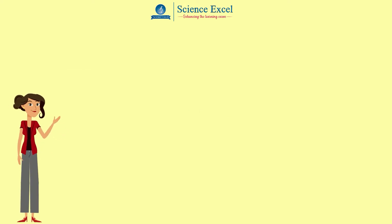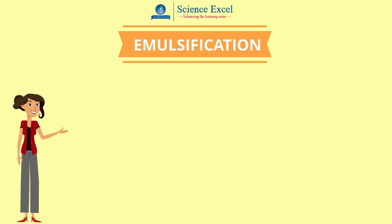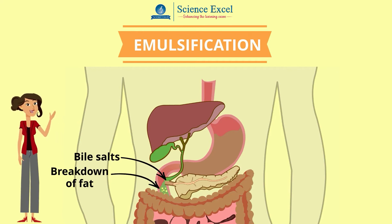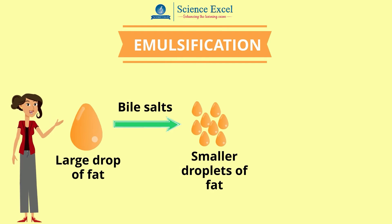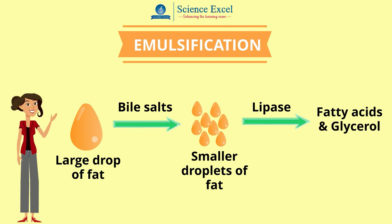Bile also has a second role, which is to emulsify fats. Emulsification is a type of mechanical digestion in which bile salts break down large drops of fat into very tiny droplets. This provides a larger surface area, making it easier for the enzyme lipase in the pancreatic juice to digest them into fatty acids and glycerol, which helps speed up the digestion process.